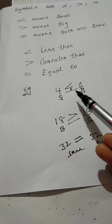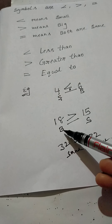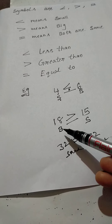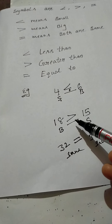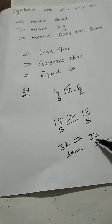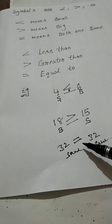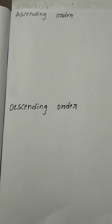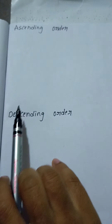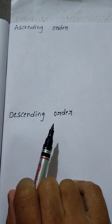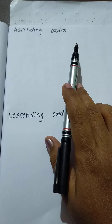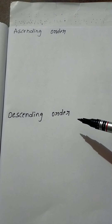Once again, I will repeat it. First, less than: comparing 4 and 6, the first one is the smallest and 6 is the biggest, so use less than. Greater than: 18 is the biggest number and 15 is the smallest, so use greater than. Next, 32 and 32 are the same numbers, so use equal to.